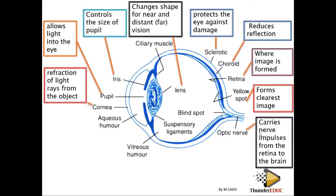The optic nerve carries impulses from the retina to the brain. When we talk about an impulse, we are talking about an electrical message. When light falls on the retina, the retina converts that light into an electrical message, which is then carried to the brain via the optic nerve. The term 'optic' relates to light.